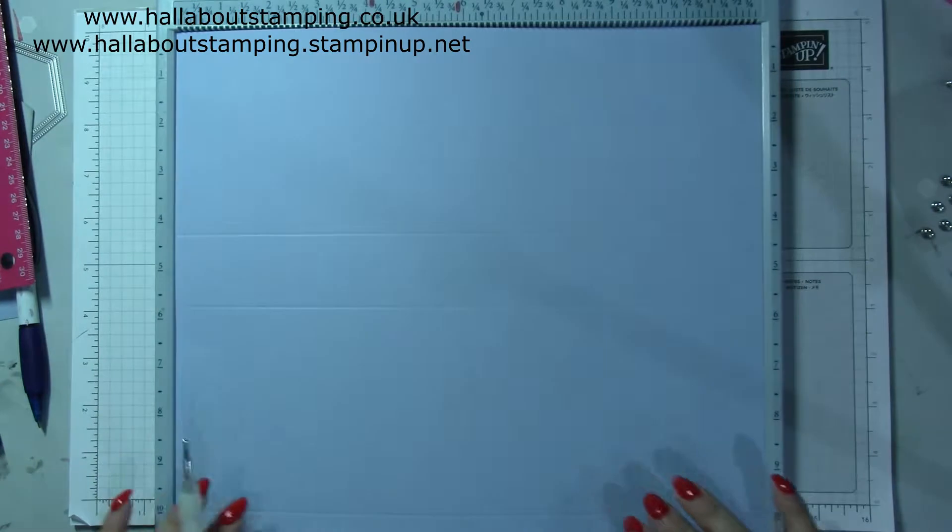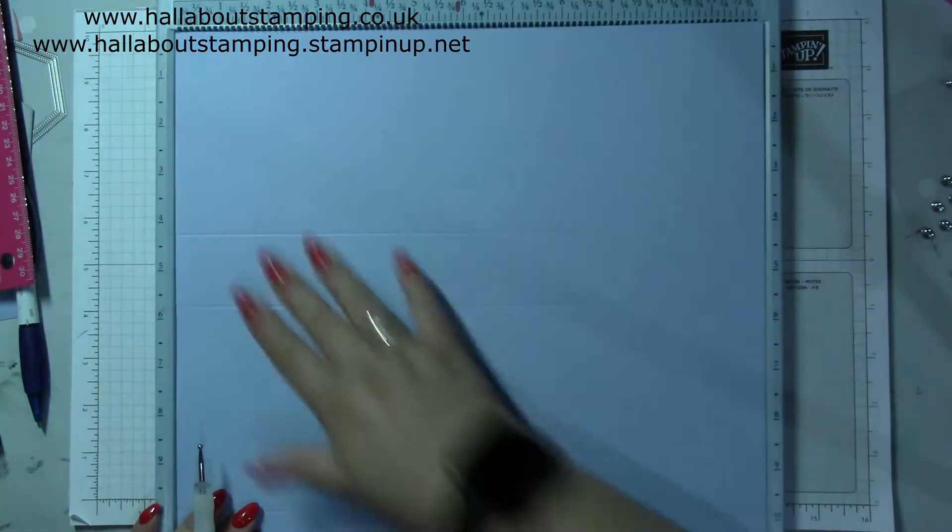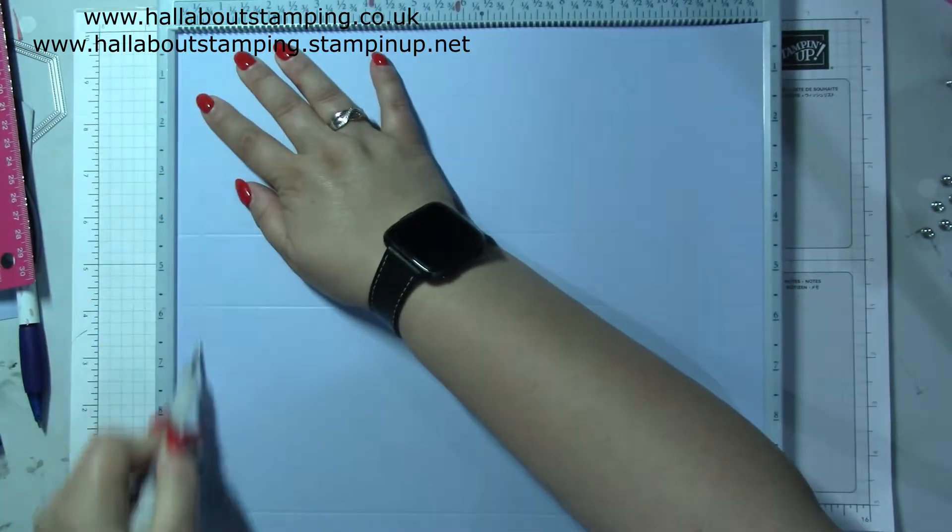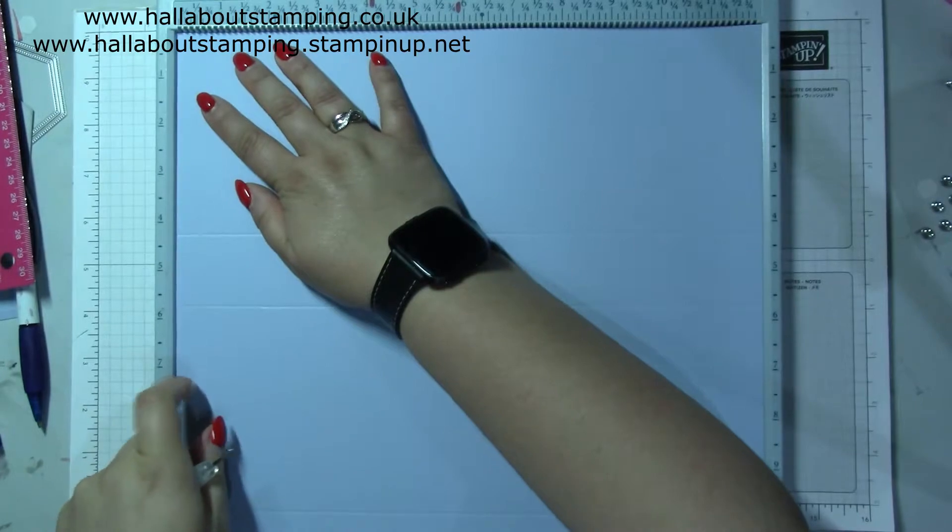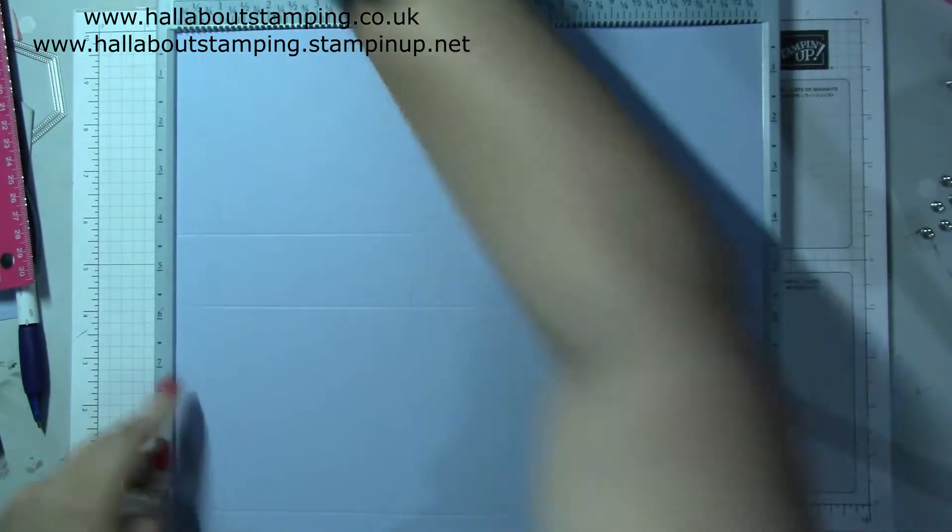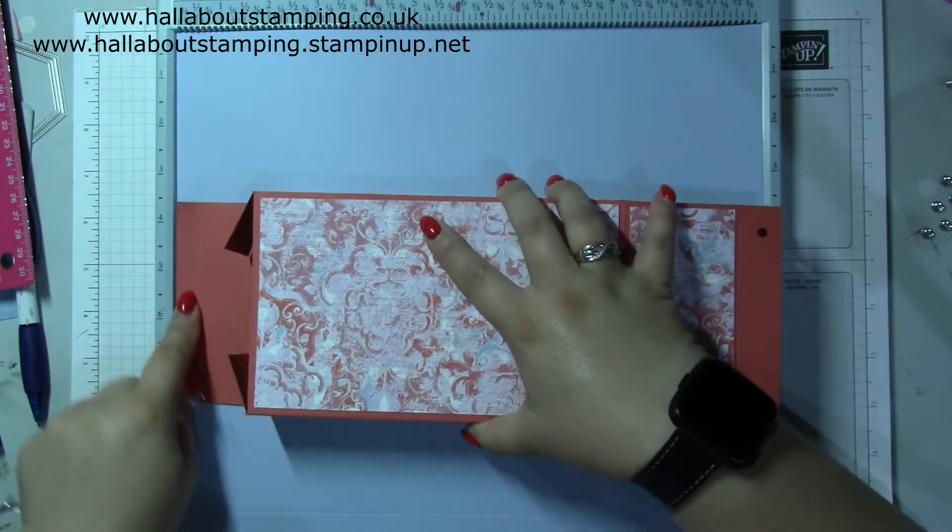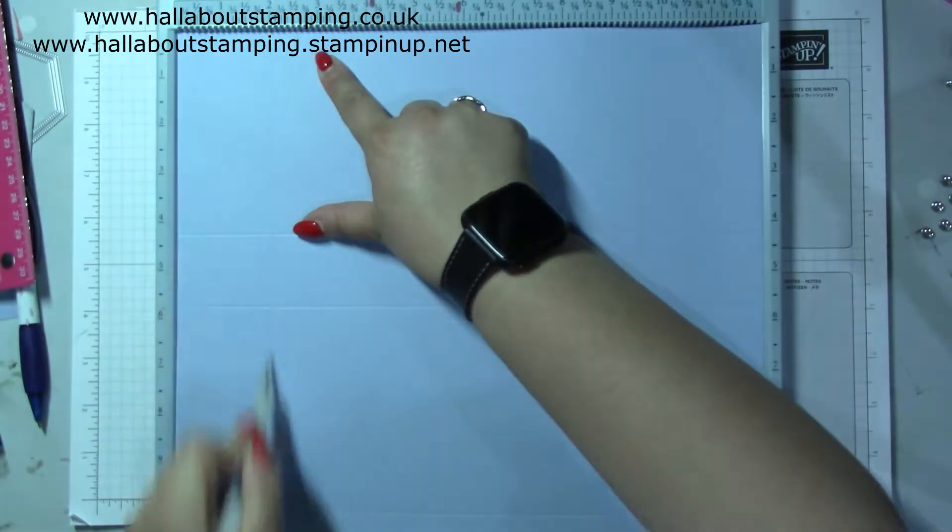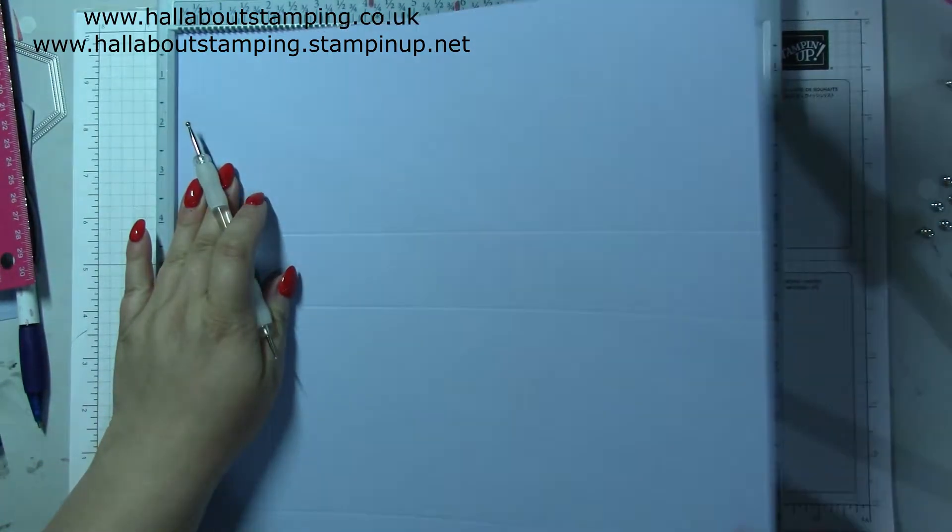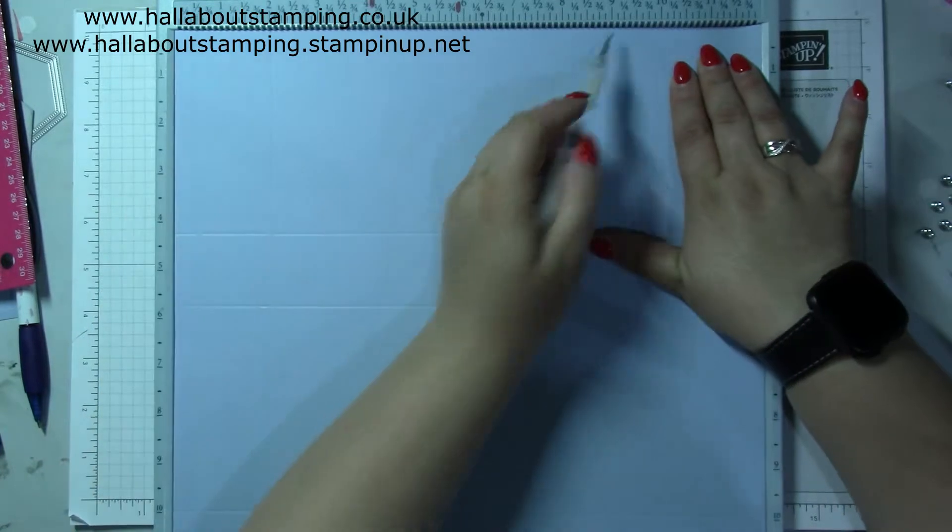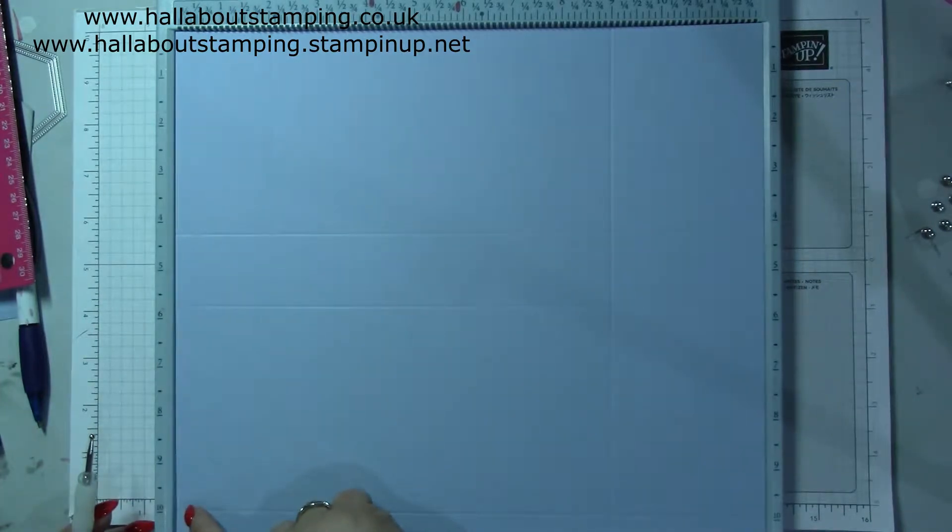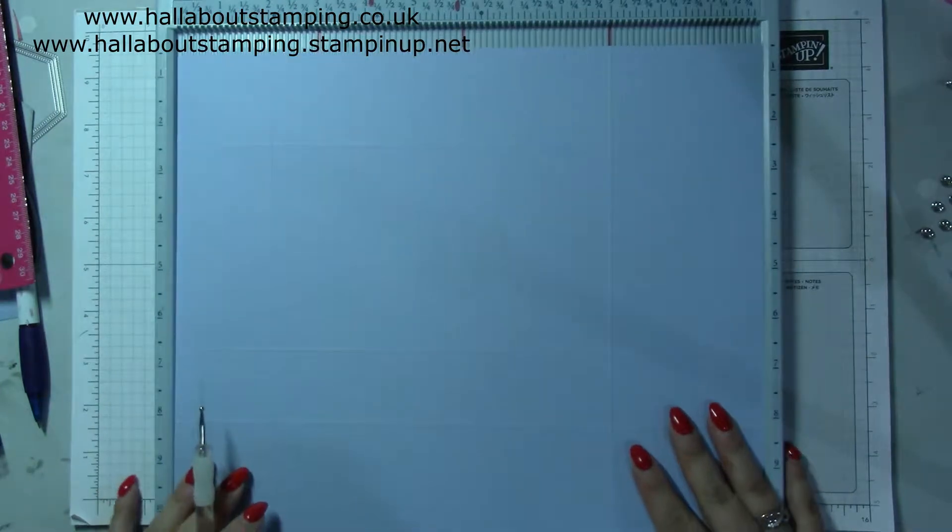I've turned that round now and we are gonna score it at half. So this bit is your bottom flap, so half, two and nine, which in metric is one, five and twenty-two.